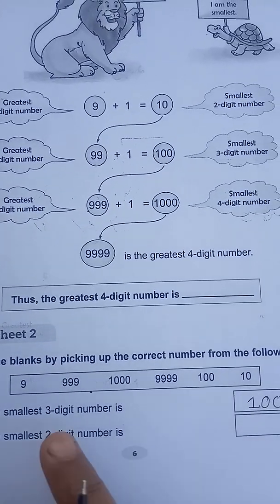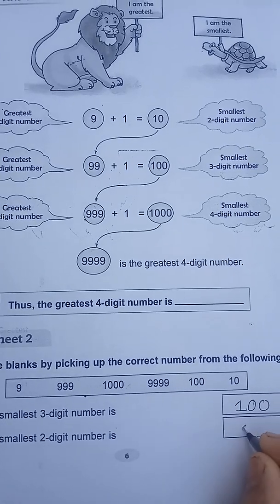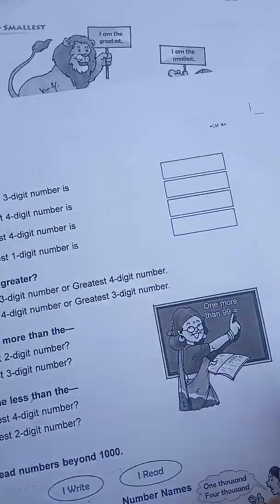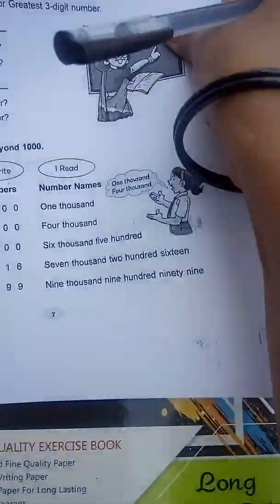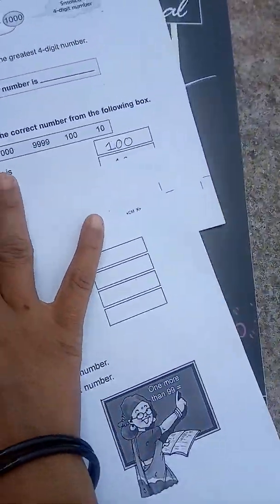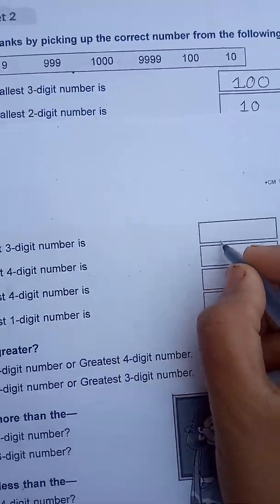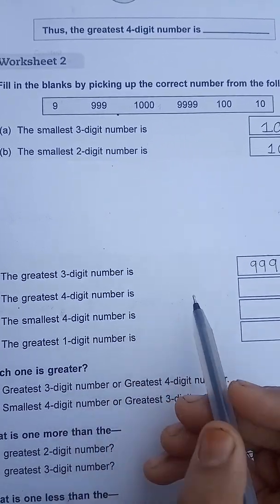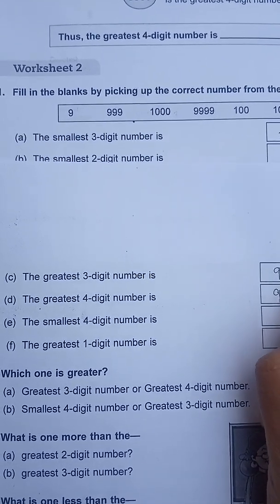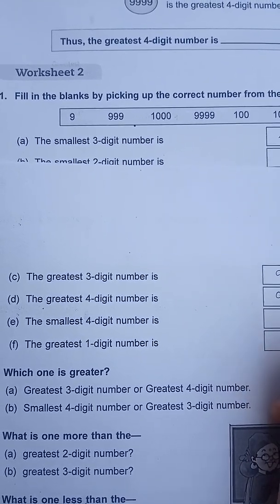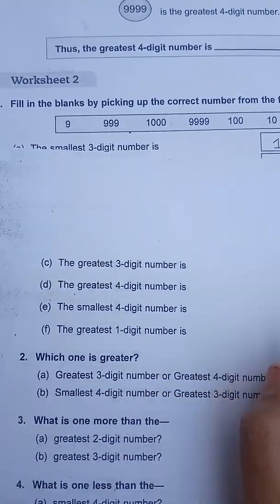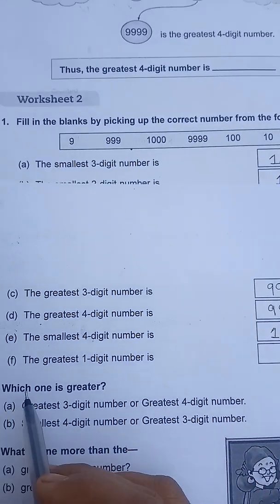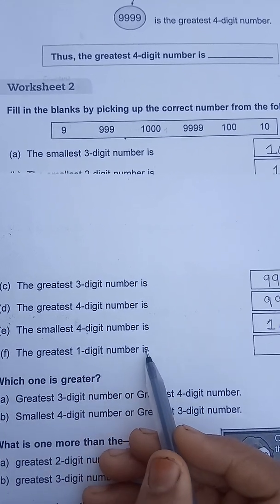Which one is the smallest two-digit number? That's right — 10. Next question: the greatest three-digit number is 999. The greatest four-digit number is 9999. The smallest four-digit number — the smallest one of four digits — is 1000.